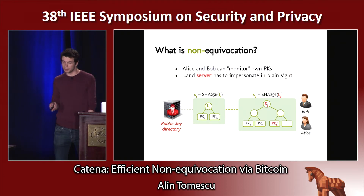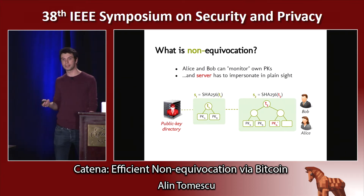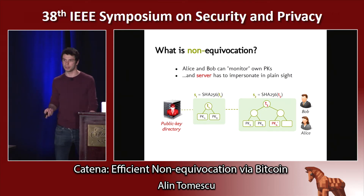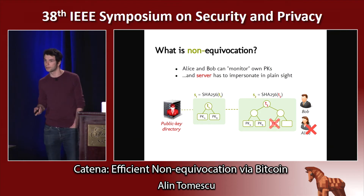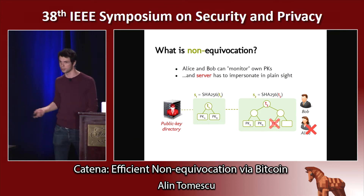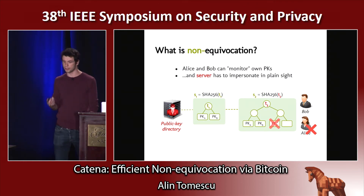What this means is that if the server wants to impersonate Alice or Bob, it has to do so in plain sight. For instance, here the server inserted a fake key for Alice to trick Bob into using it. But because of non-equivocation, Alice and Bob see the same directory and Alice can detect this fake key. This is not to say that their secrecy is preserved, because Bob could use that key anyway before Alice has a chance to detect it and yell to the world that she's been impersonated.